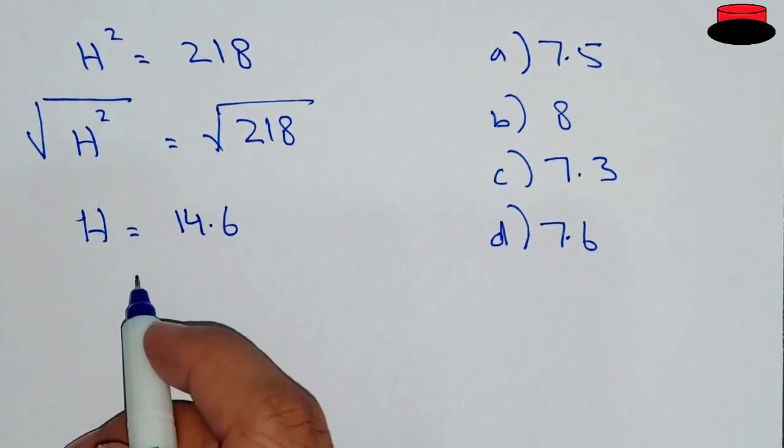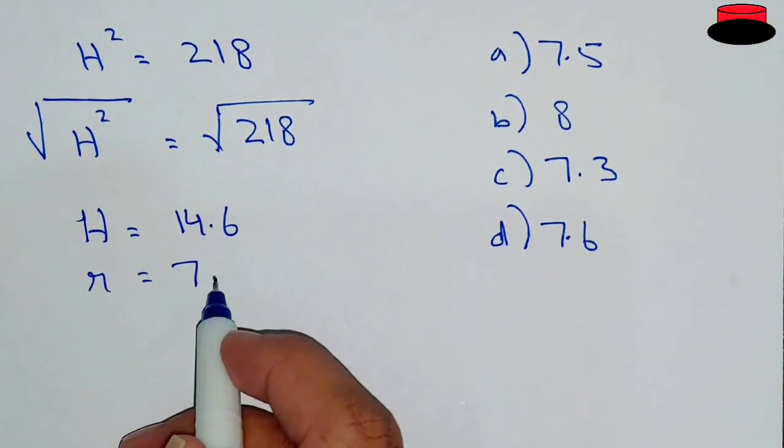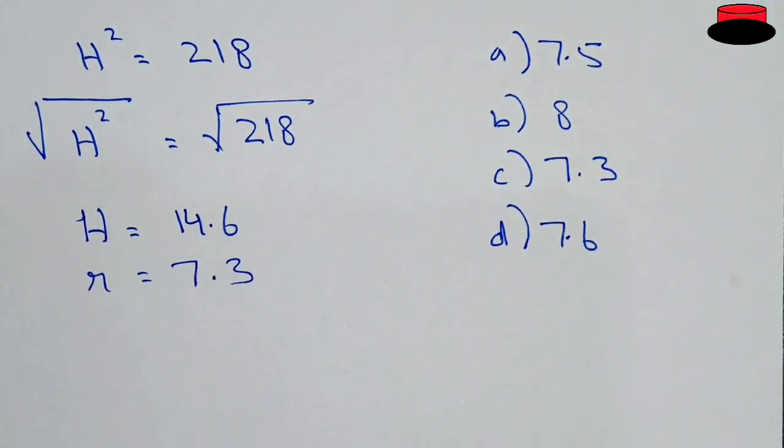So the only option left is 7.3. Square root of 218 will be 14.6, and the half of that, the radius, is 7.3.